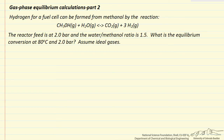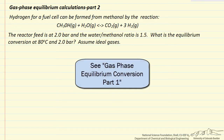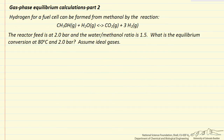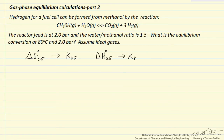In this problem we're calculating the equilibrium conversion at 80 degrees C and 2 bar for the reaction of methanol and water to make CO2 and hydrogen. In Part 1, the first screencast, we calculated the equilibrium constant at 80 degrees C by first calculating the Gibbs free energy change at 25 degrees C, which gave us the equilibrium constant at 25 degrees C. We then calculated delta H reaction at 25 degrees C, assumed it was constant, and used the Van't Hoff equation to get the equilibrium constant at 80 degrees C, which was 94.4 (dimensionless).